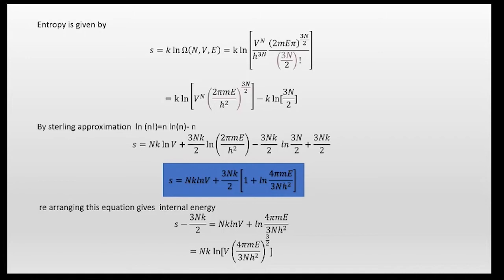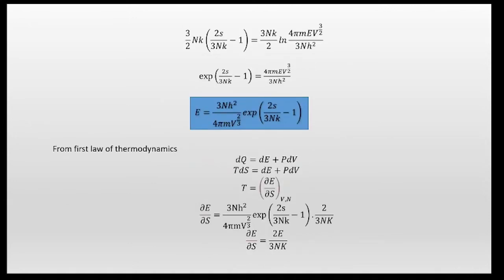We rearrange to obtain the internal energy. From the entropy expression, exponentiating both sides yields E = (3nh² / 4πm) · (V)^(−2/3n) · exp(2S/3nk − 1). This gives us E as a function of S, V, and N, which we can differentiate to find temperature and pressure.